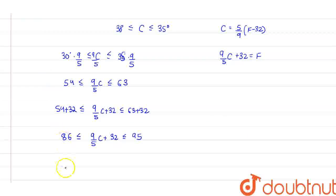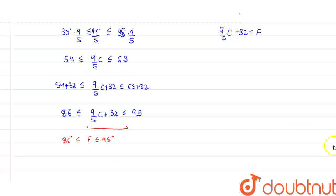And this whole term gives us 86 degree less than equal to F less than equal to 95 degree. So from here, I find the range of F. The range of temperature in Fahrenheit is between 86 degrees and 95 degrees.